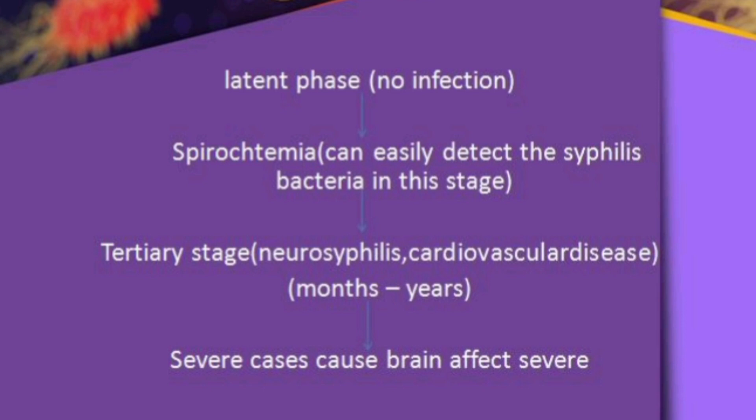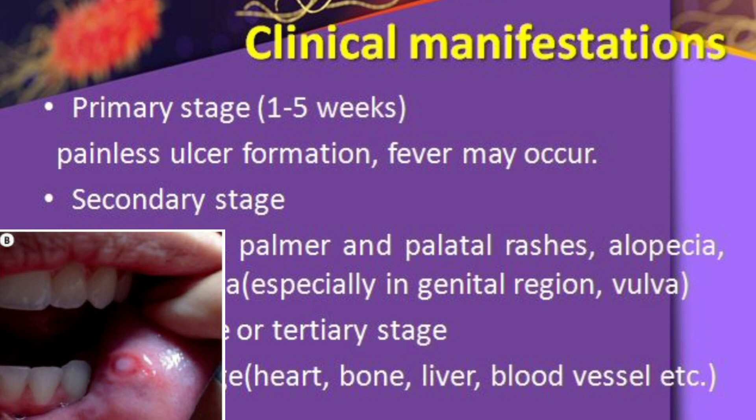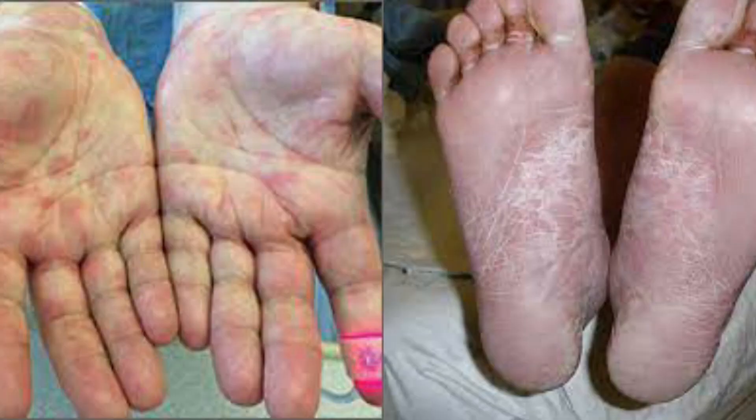That is the pathophysiology of syphilis. For clinical manifestations, in the primary stage a painless ulcer forms with a slight fever — so most patients won't initially suspect syphilis. In the secondary stage, you have palmar and palatal rashes — rashes under the palm and palate — as well as alopecia and body rashes.